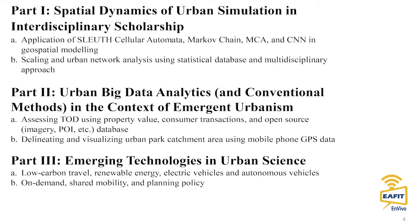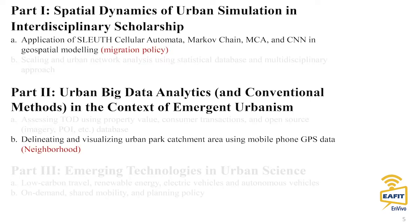Today I'm going to talk about part 1a: the application of cellular automata model, specifically the SLEUTH model. I'll also introduce the MCA model and the CNN — Convolutional Neural Network model — and how they can be applied to geospatial modeling. I also have migration policy in mind as a research direction. Part two covers urban big data, focusing on the planning of urban green systems using cell phone data.